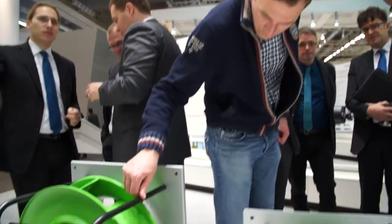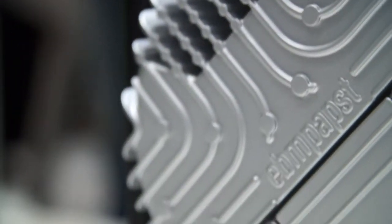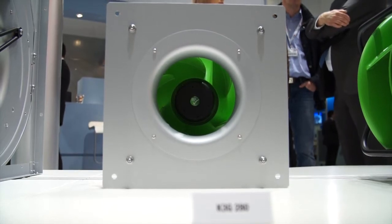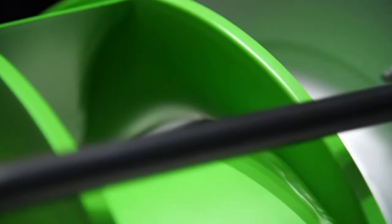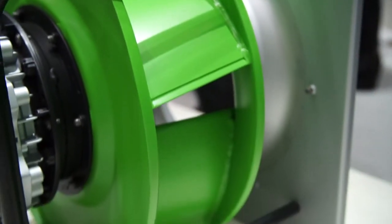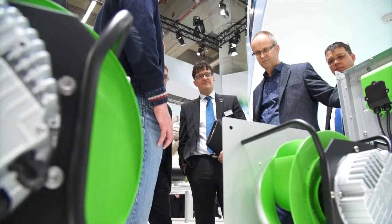A fan always has to be viewed as a complete system. It consists of the impeller, the motor, the control electronics and the housing. All components, from the electrical connection to the impeller outlet and even the way it is installed in the air handling unit, were taken into consideration during the optimization process.